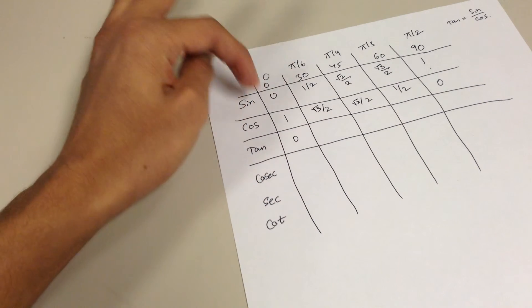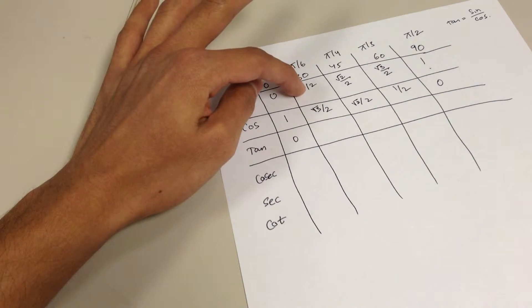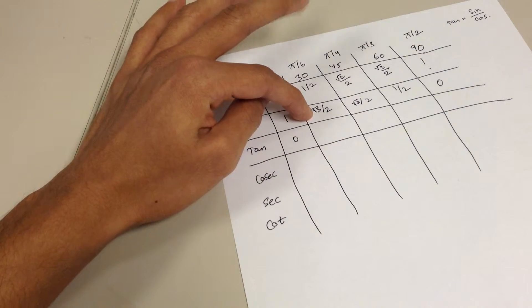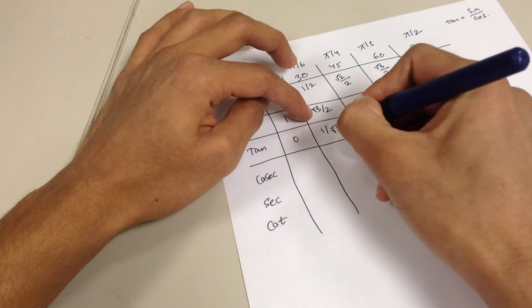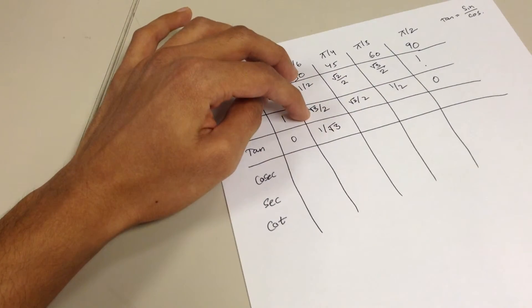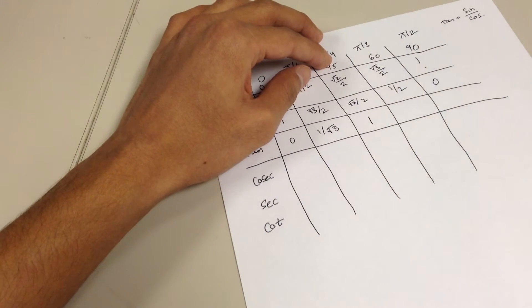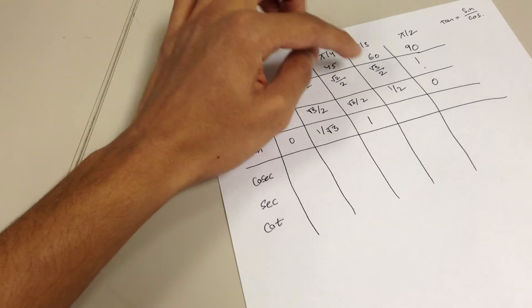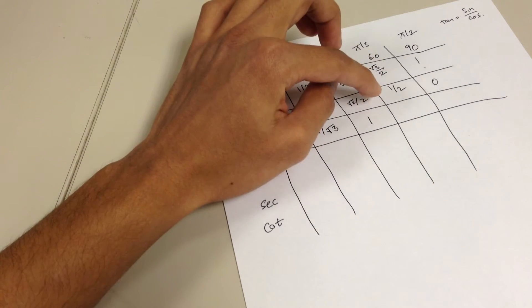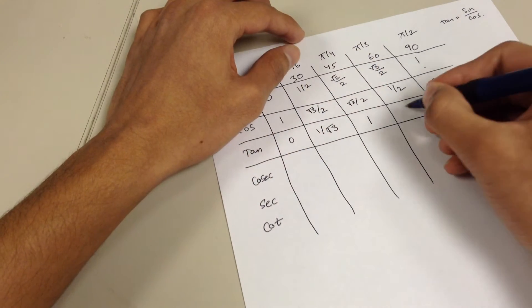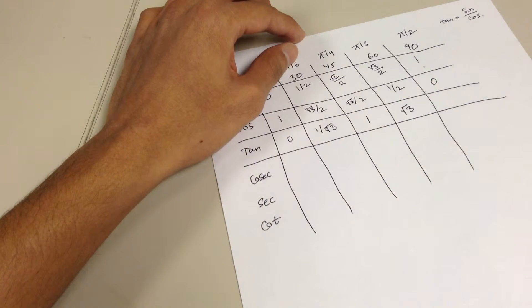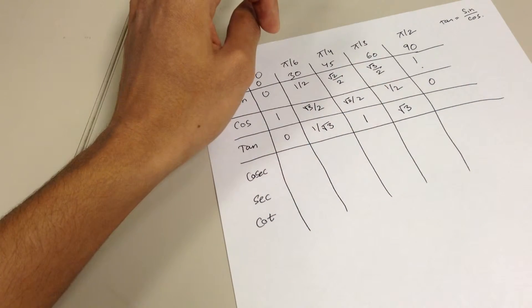And then I do, for tangent of 30, I do one half divided by square root of three over two, and I get one over square root of three. You keep on doing the same thing for every single value. This divided by that, well they're the same thing, so that just gives you one. And then, now, square root of three divided by two over one half. What does that give you? Well that gives you square root of three. If you do the math, you get square root of three.